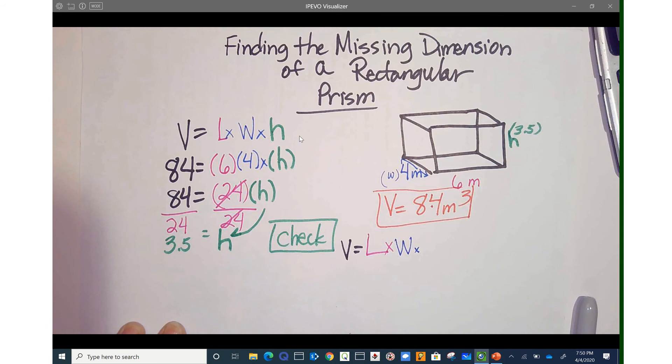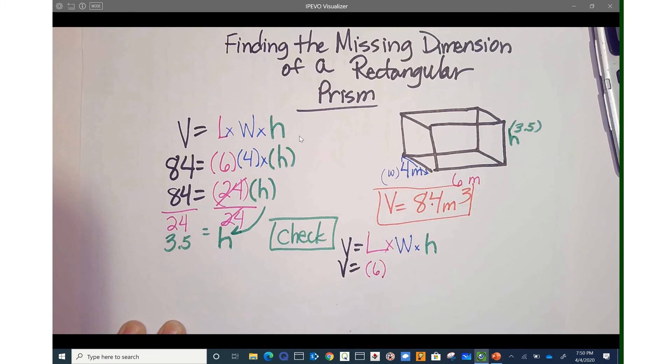All right. Let's go ahead and just plug in the numbers. Volume equals, my length is 6, my width is 4, and because I'm checking, my height is 3.5.